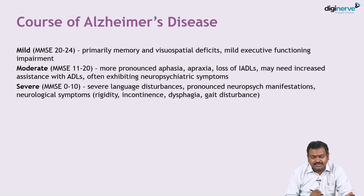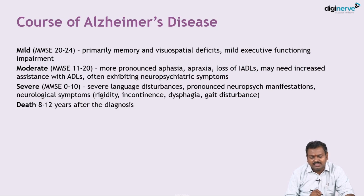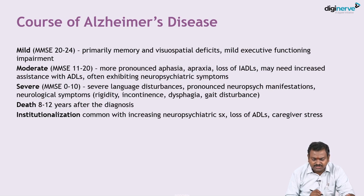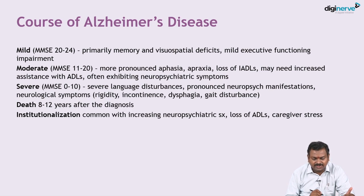In severe Alzheimer's, patients can have extrapyramidal symptoms, dysphagia, and gait disturbances. Death usually occurs 8 to 12 years after diagnosis. Institutionalization is increasingly common, primarily because of neuropsychiatric manifestations, loss of ADLs, and caregiver stress.